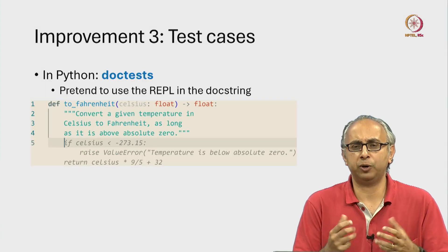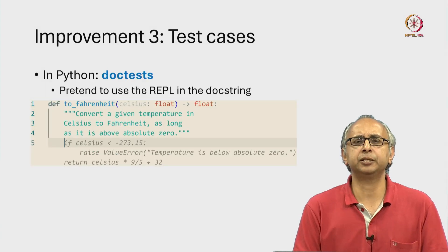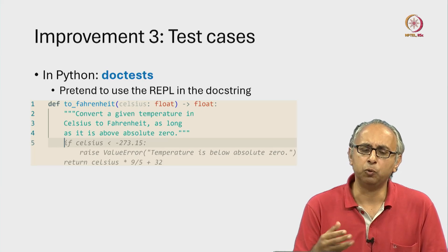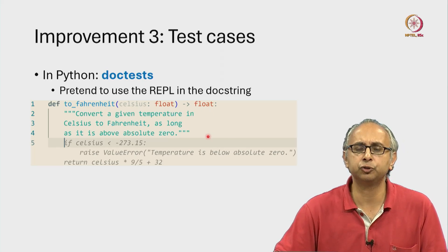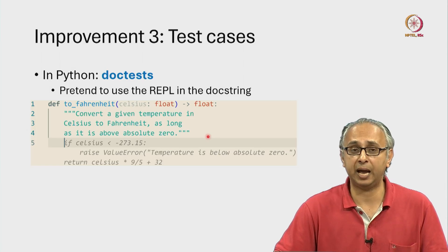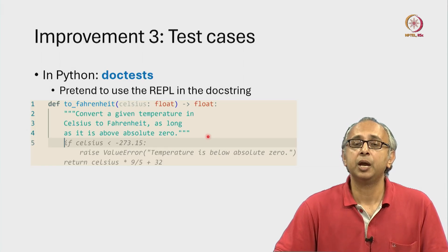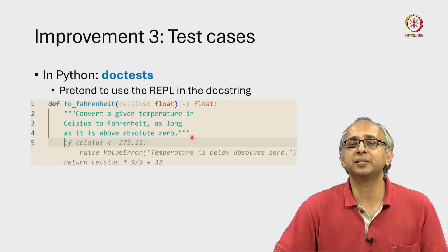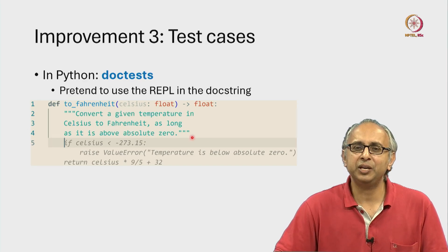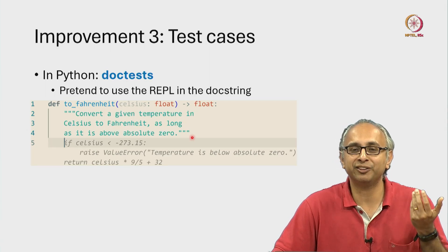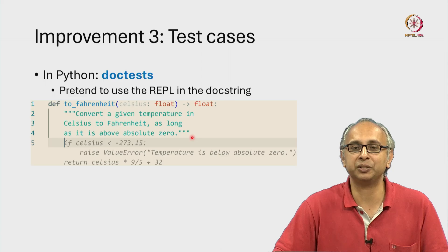To guide our AI and write a better docstring, we should probably say explicitly what we want our function to do if the input is not above absolute zero. One way we can do that is by writing more text, but another way is by writing an example of what the function should do if the value is below absolute zero. So we'll write a test case.